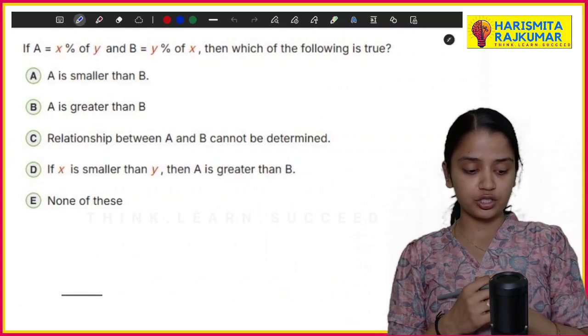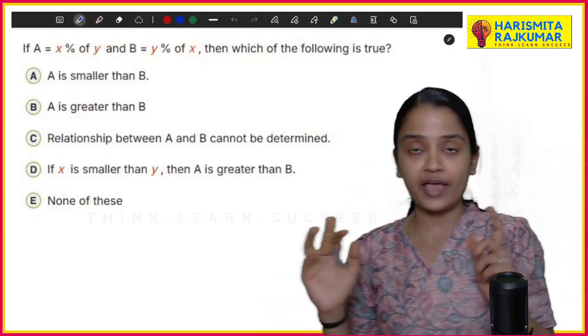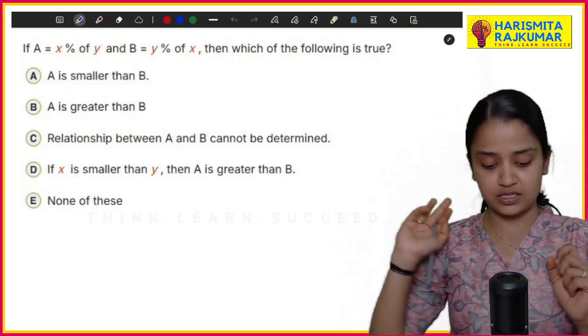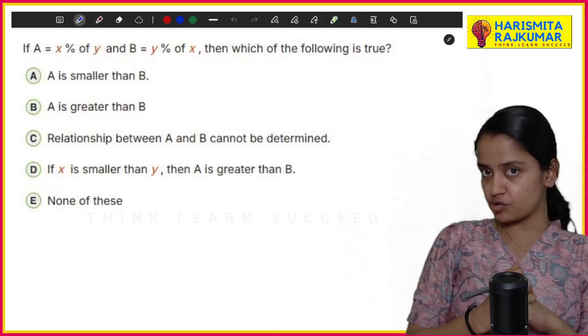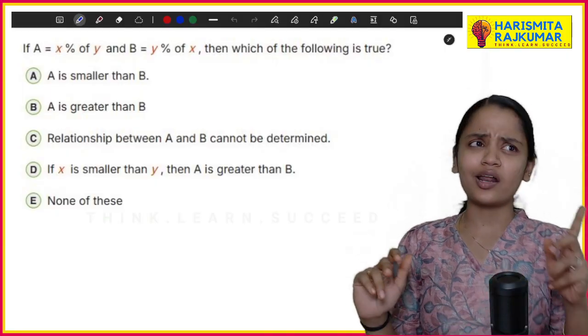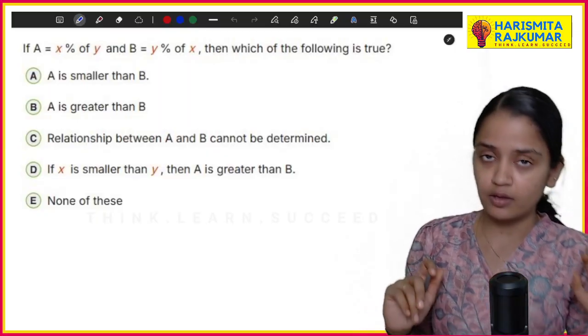Now the question: if A = x% of y and B = y% of x, which of the following is true? If you have seen my part two video around I think after four minutes, I have mentioned about property one.